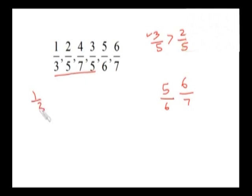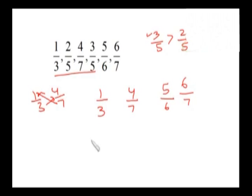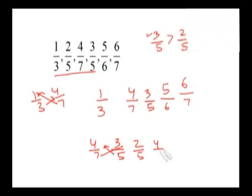Now for 1 by 3 versus 4 by 7: cross multiplying gives 7 and 12, so 4 by 7 is greater than 1 by 3. Comparing 4 by 7 and 3 by 5 gives 20 and 21, so 3 by 5 is greater than 4 by 7. Between 2 by 5 and 4 by 7 it's 14 and 20, so 4 by 7 is greater than 2 by 5. So the ascending order is: 1 by 3, 2 by 5, 4 by 7, 3 by 5, 5 by 6, and 6 by 7.